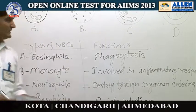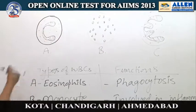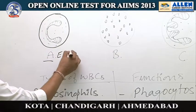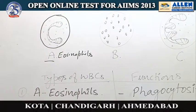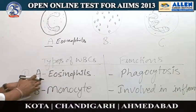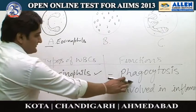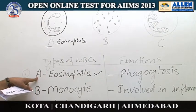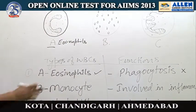Let's see the first one. This cell has a bilobed nucleus, so this cell can be identified as eosinophils, because eosinophils have a bilobed nucleus. In the first option, eosinophils is written — so the type is correctly identified. However, the function given is phagocytosis, and eosinophils are not involved in phagocytic action, so the function is wrong.